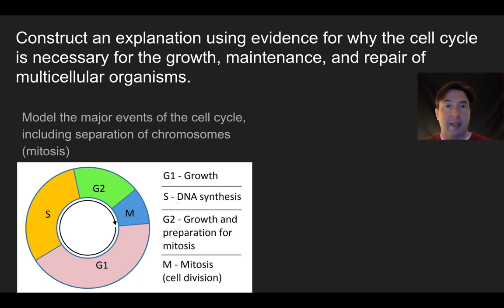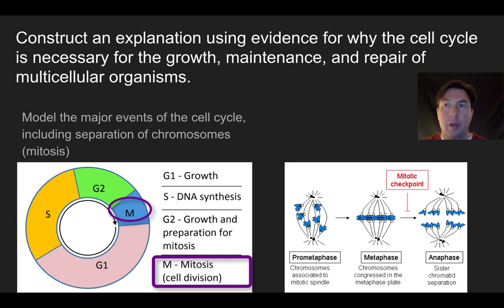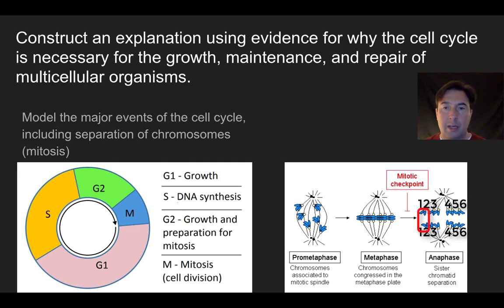Now let's talk in more detail about the separation of chromosomes. Maintenance is mostly during G1 and S phase — we'll get to repair in a moment. During M phase, these three pictures show what happens during mitosis. You don't need to know the specific phases of mitosis, but you should know there are separate division steps from when you leave G2 to when you get two separate cells at the beginning of G1. This models a cell with six chromosomes — during pro-metaphase they're scattered, they get organized in metaphase, then pulled apart.